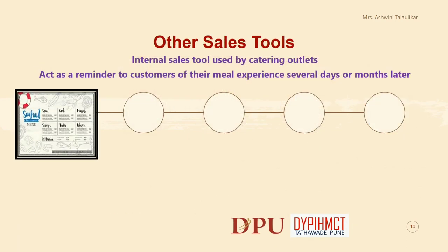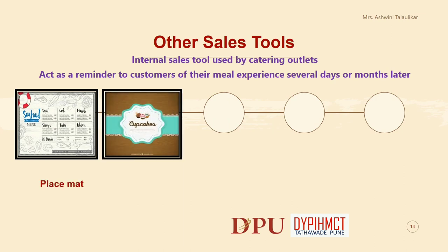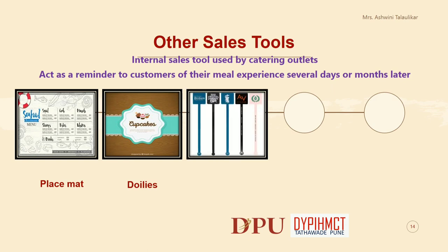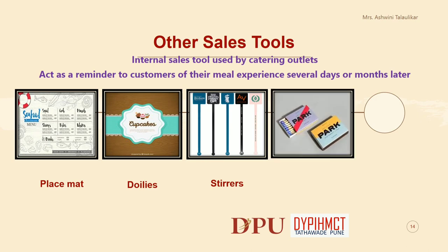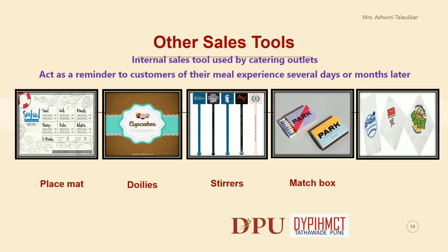Other Sale Tools — Internal Sale Tools used by catering outlets. They act as a reminder to customers of their meal experience several days or months later. Examples include Placemats, Doilies, Stirrers, Matchboxes, and Napkins.